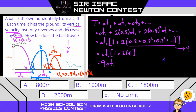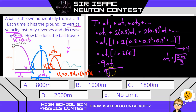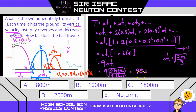Since delta T1 equals the square root of 2 times delta Y divided by G, the total time equals 9 times the square root of 2 times 490, all divided by 9.81 meters per second squared, which gives us 90 seconds. That's fascinating — the sum of an infinite number of bounces occurs in a finite time of 90 seconds. That's why this problem is one of my favorites.